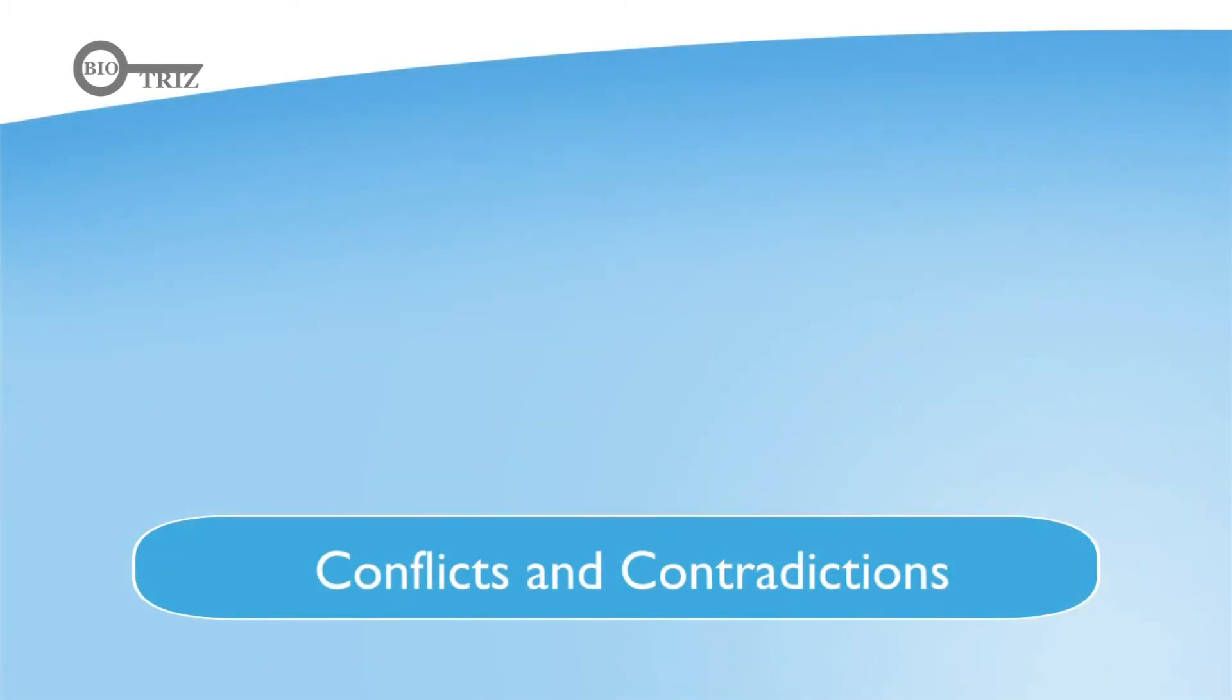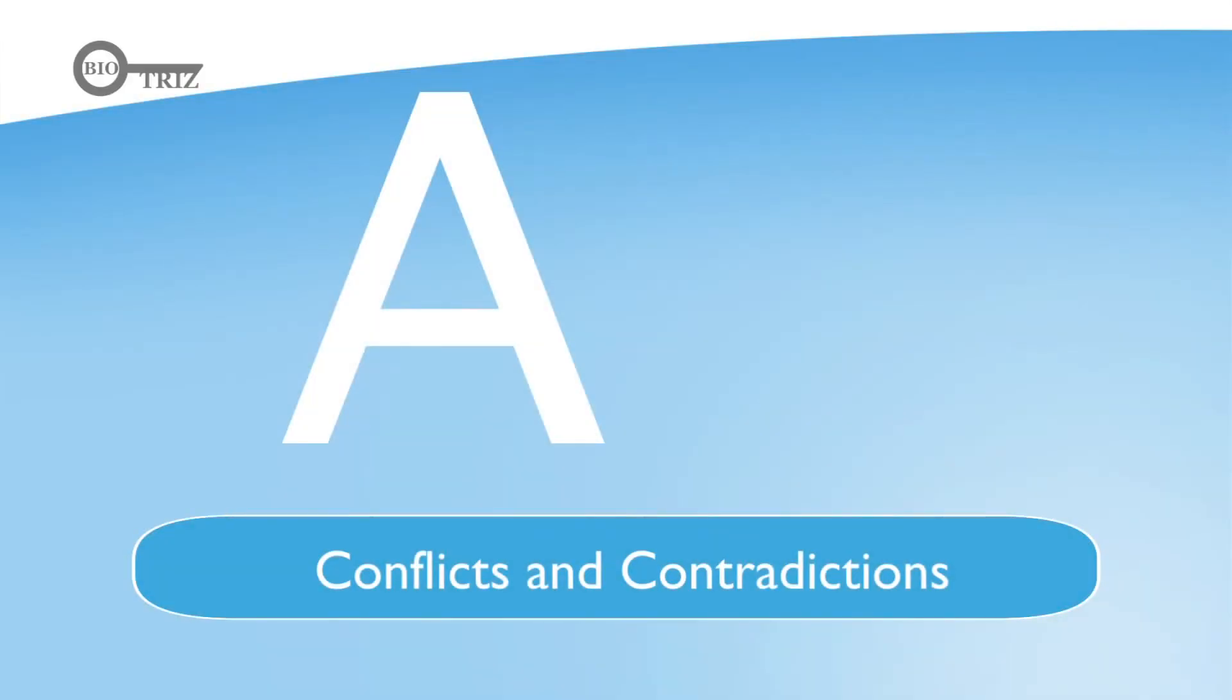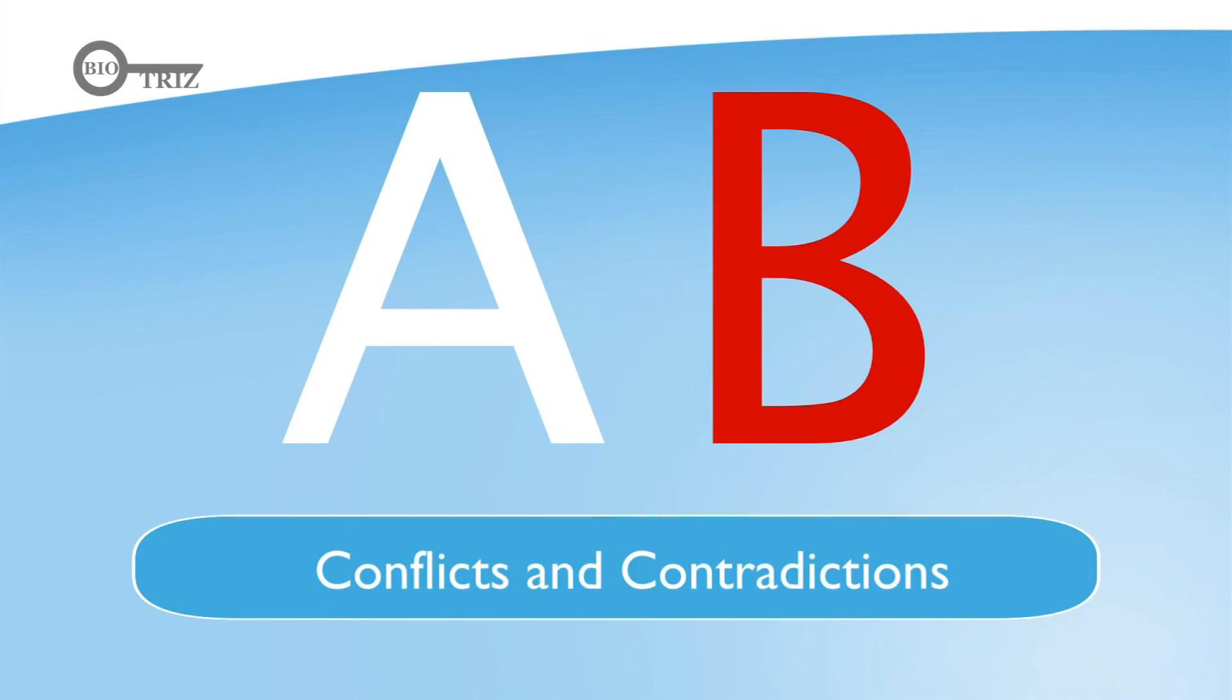Now we need to state clearly what exactly does not allow us to modify the resources in the desirable way. For example, I need something big and small at the same time. Or, I need A, but B gets worse. I want it large, but it gets heavier.